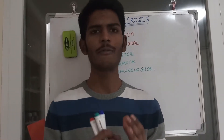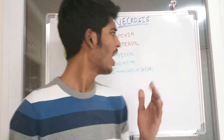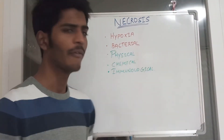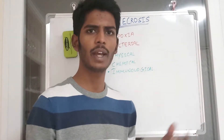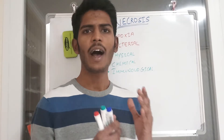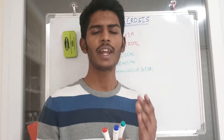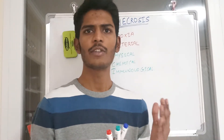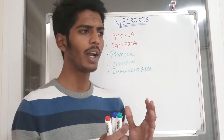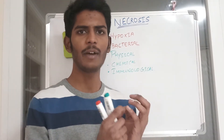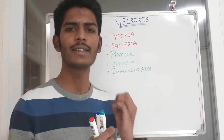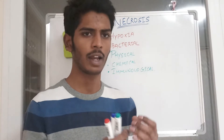So what are the factors which influence necrosis? One is hypoxia — whenever there is a loss of blood supply to an organ it can lead to necrosis. The other one is bacteriological; for example, if there is an infection, the effect of the microorganism leads to the localized cell death in an organ.